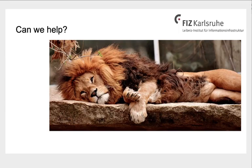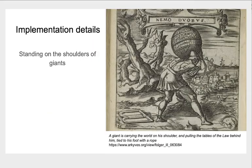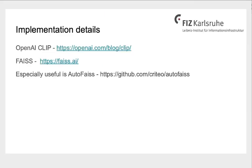How does this work? We are standing on the shoulders of giants. For the visual similarity searches, we are using the OpenAI CLIP neural network. For the similarity searches, it is the Facebook AI similarity search to do the nearest neighbor search. And what is particularly useful is the Autofaiss library to fine-tune the parameters for the nearest neighbor search.